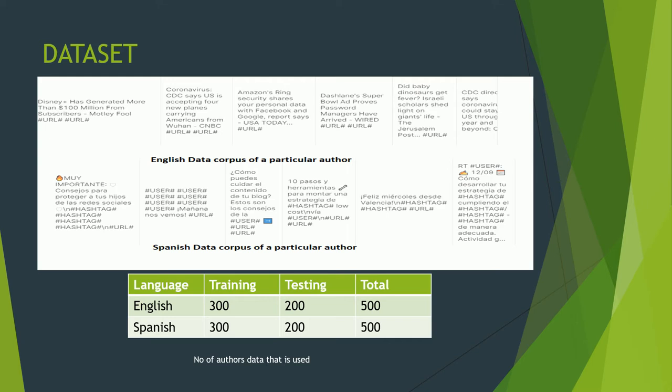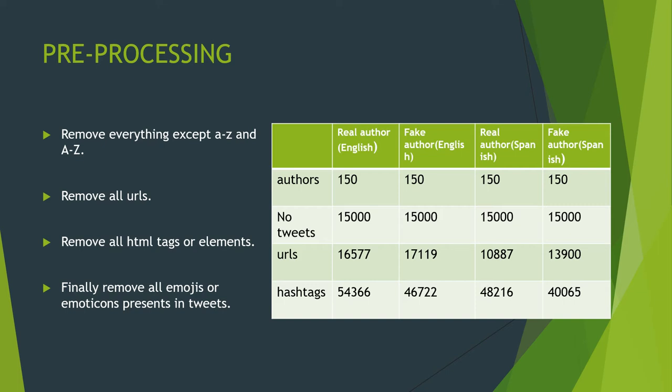This is a snapshot of the dataset provided by the organizer. Above, one is an English data corpus of a particular author — six tweets for English and six tweets for Spanish. 300 authors' tweets are provided for English and 300 for Spanish for training, and testing is done on 200 authors' tweets for English as well as Spanish, so total 500 authors' data for English and 500 for Spanish. Testing data is hidden from us.